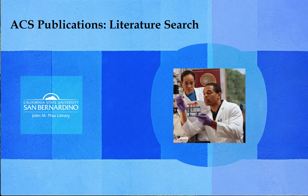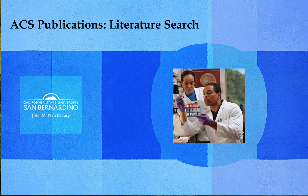ACS Publications Literature Search, brought to you by the John M. Pfau Library at California State University, San Bernardino. My name is Bonnie Petrie, I'm one of the reference librarians, and I'm going to show you how to find scholarly journal articles with original research in the ACS Publications database.